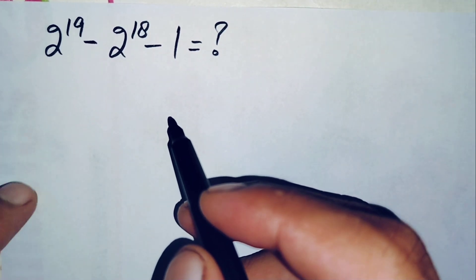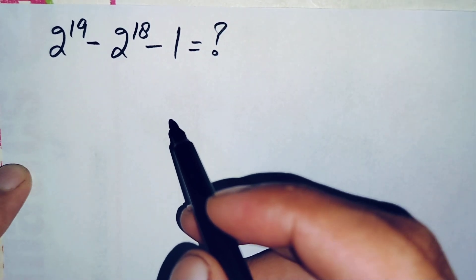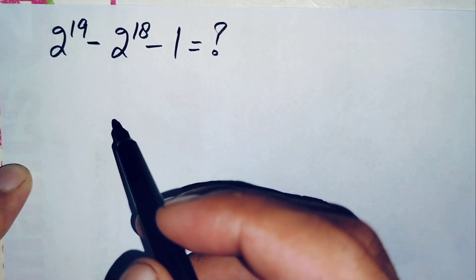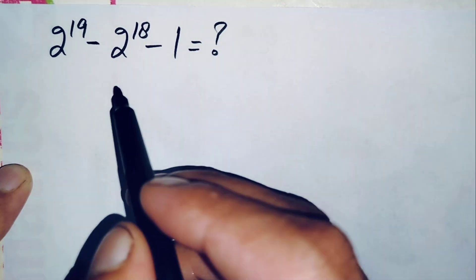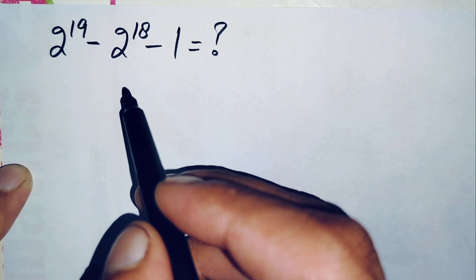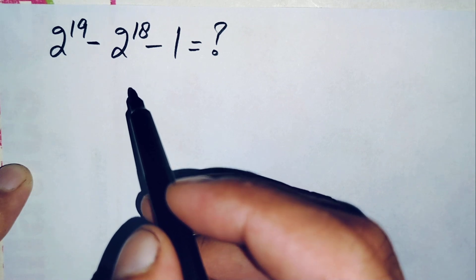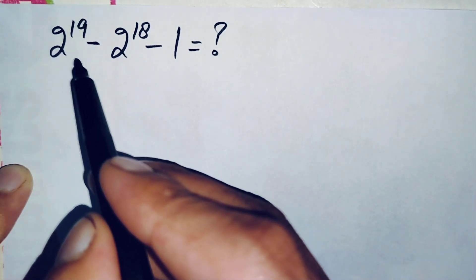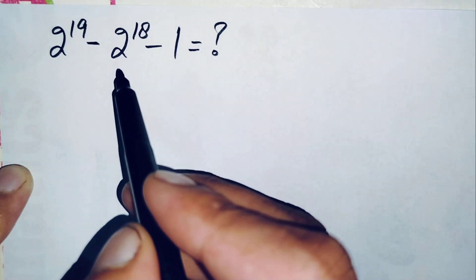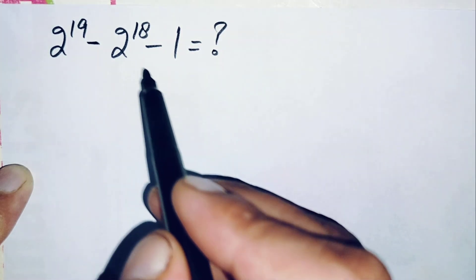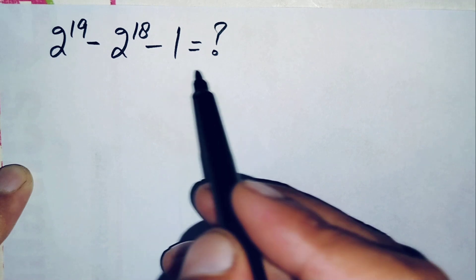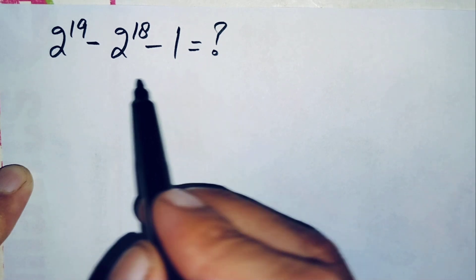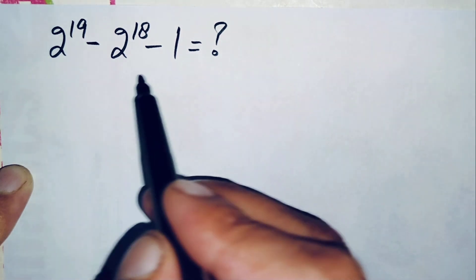Hello everyone, you are welcome. How to solve and find the value of this interesting simplification math problem, which is 2 raised to power 19 minus 2 raised to power 18 minus 1 is equal to question mark.